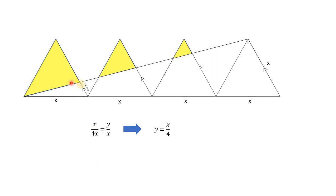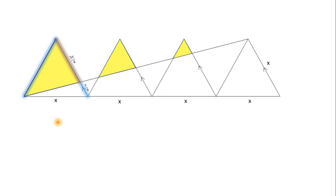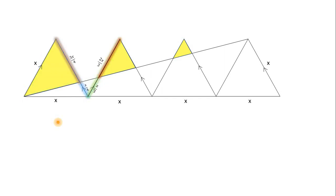We found this segment is X/4. Since this whole line is X, this remaining line will be X minus X/4, which is 3X/4. Now, since this and these lines are parallel, these two triangles are also similar, and by proportionality we get this side is X/3. This whole line is X, so the remaining part is X minus X/3, which is 2X/3.